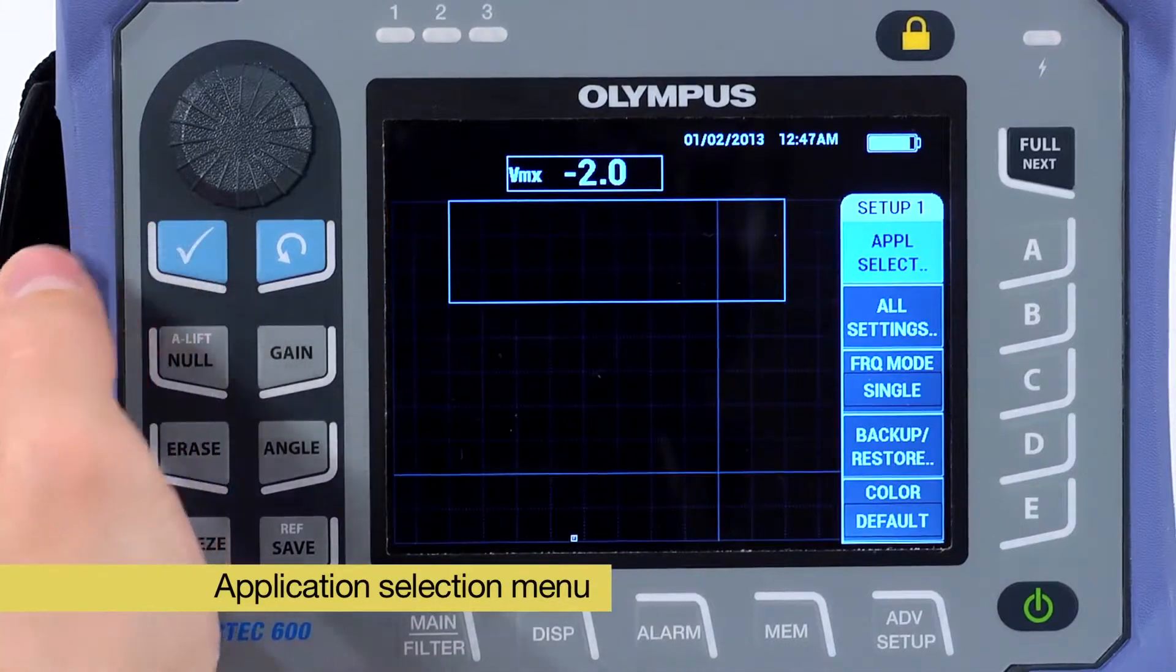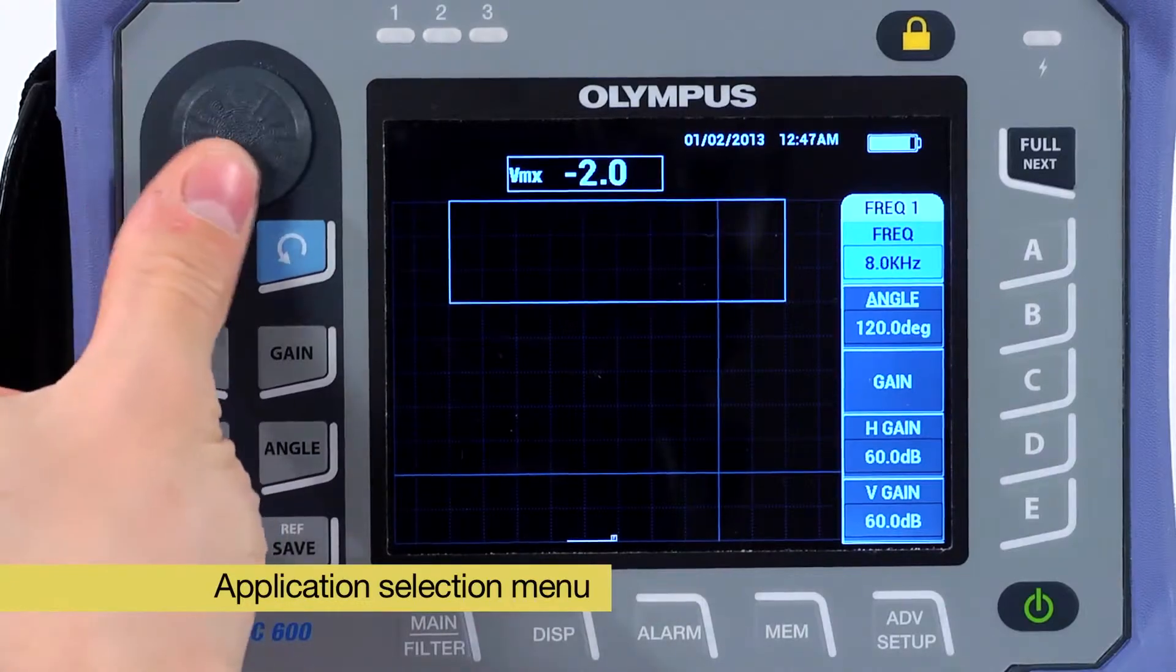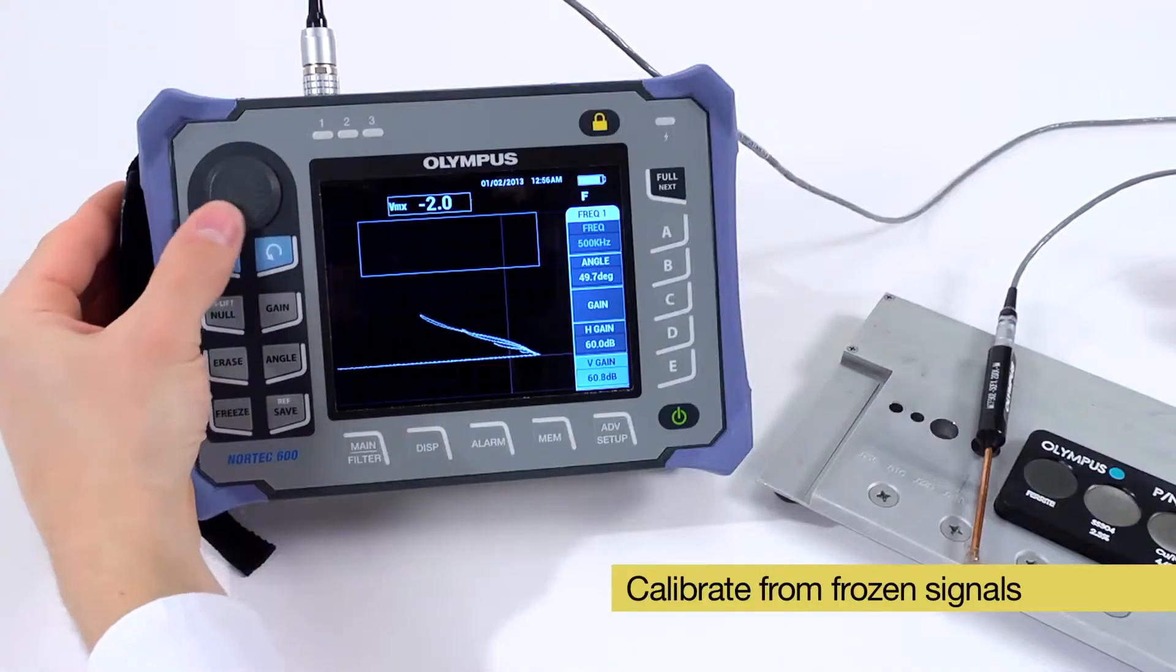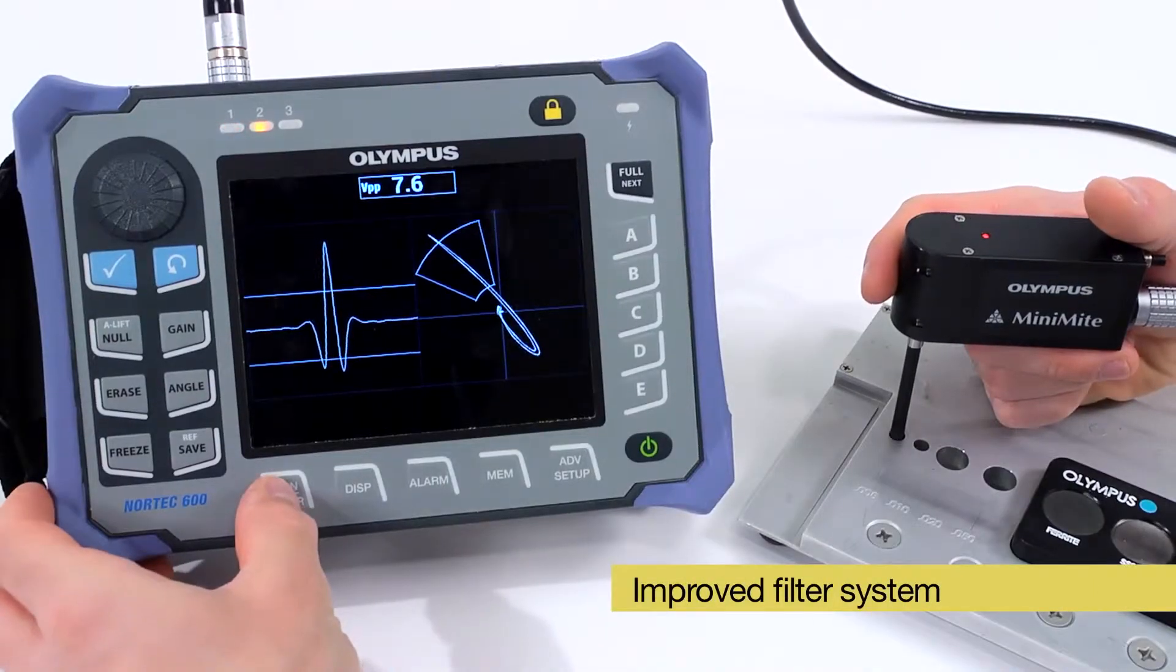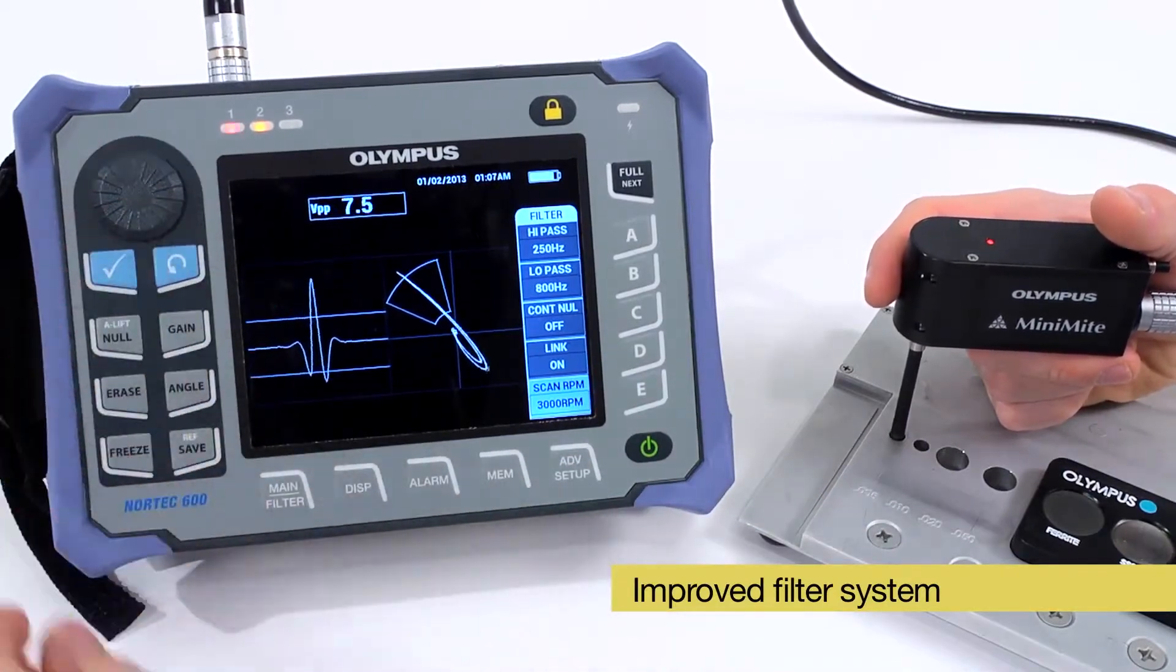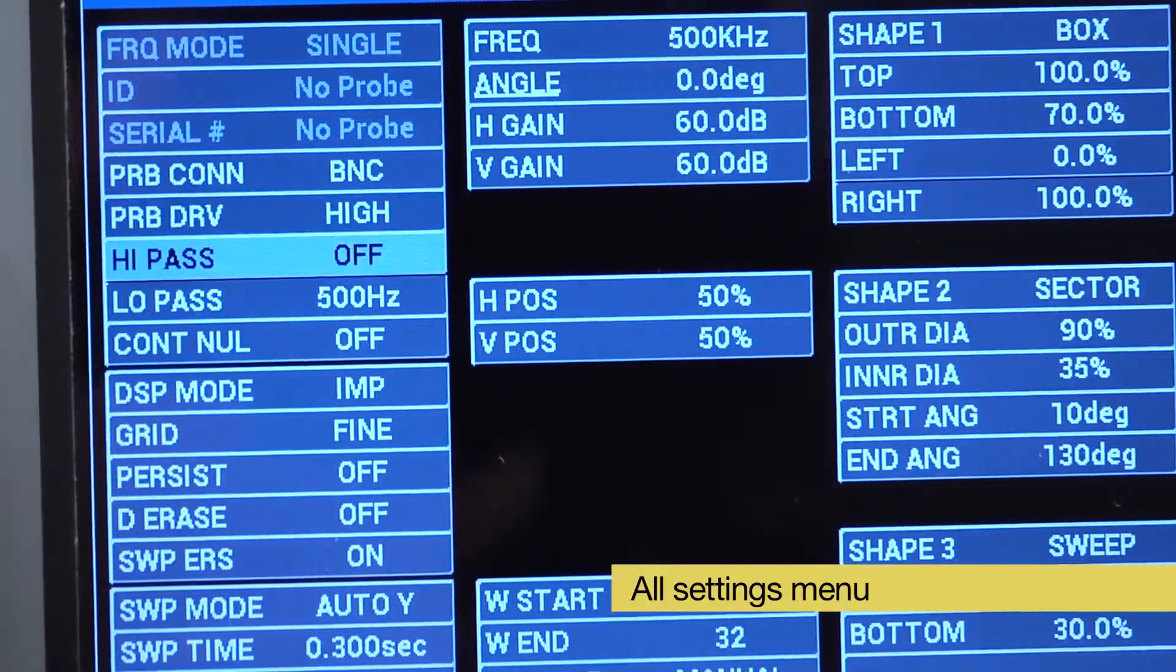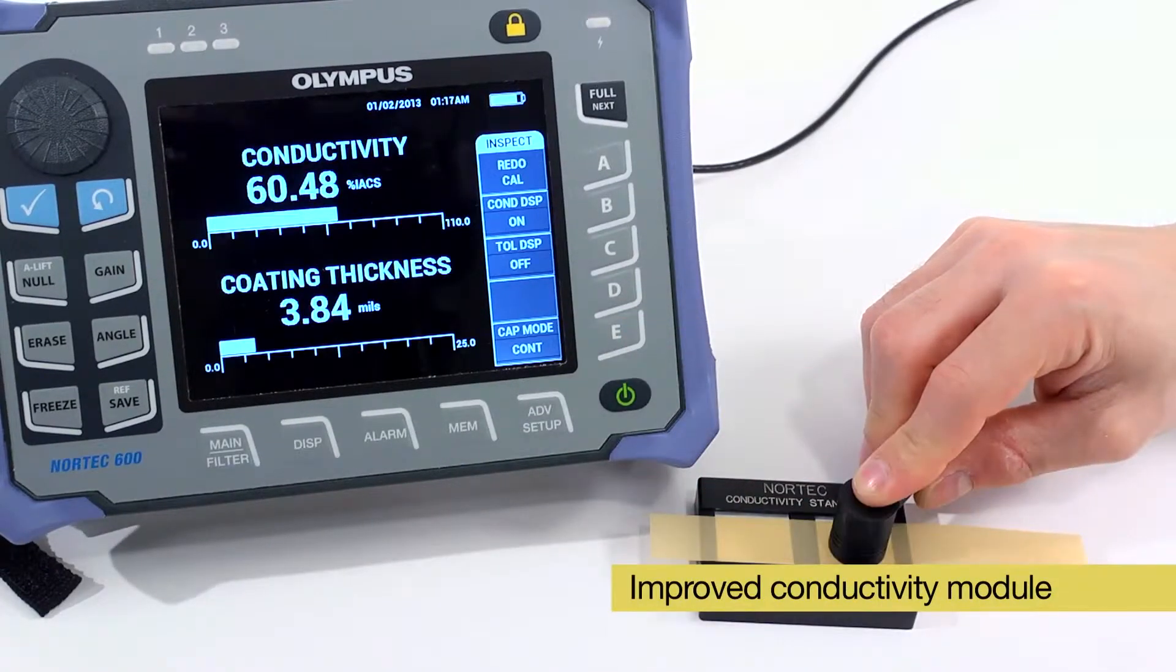Once an application has been selected, only a few parameters need to be changed in order to calibrate the signals. Other innovative features include the ability to calibrate from frozen signals which separates the scanning motion from the calibration, an improved filter system displaying standard figure six signals for rotary scanner applications, the all settings menu which is useful to quickly configure the instrument from a procedure, and an improved conductivity module with an easy to use calibration wizard.